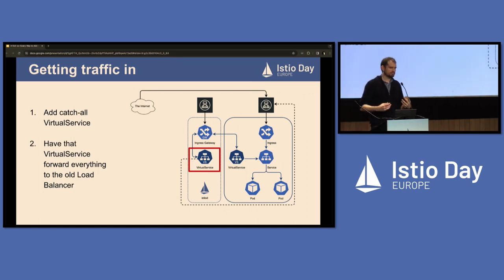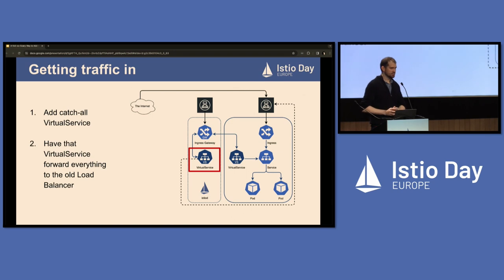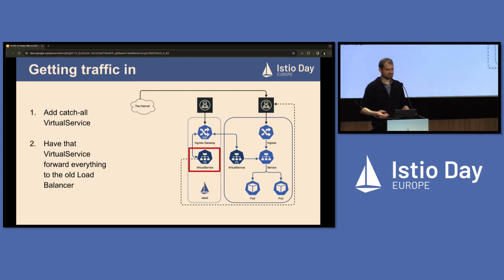Once we've tested this and perhaps deployed it, we're still not entirely sure everything will work. So we add a bypass service: a special virtual service that says it's not going to listen to any specific path or hostname, and instead of pointing to a Kubernetes service it points back to the old load balancer. Because it's essentially a wildcard, it gets the lowest priority and will never receive traffic unless none of the other virtual services in your cluster match. That's why it's called a bypass or fallback service.